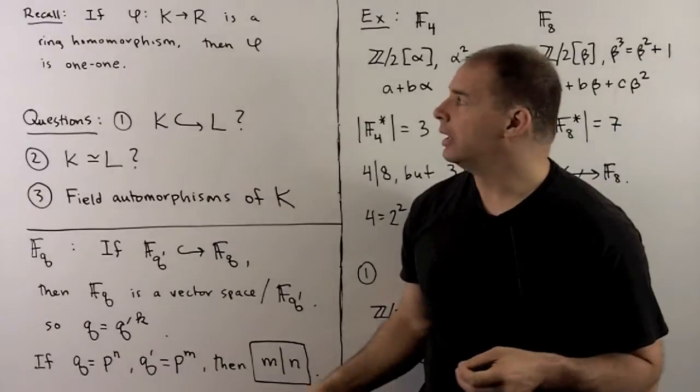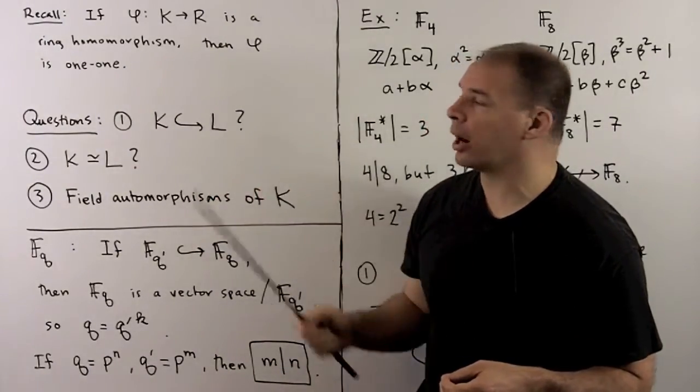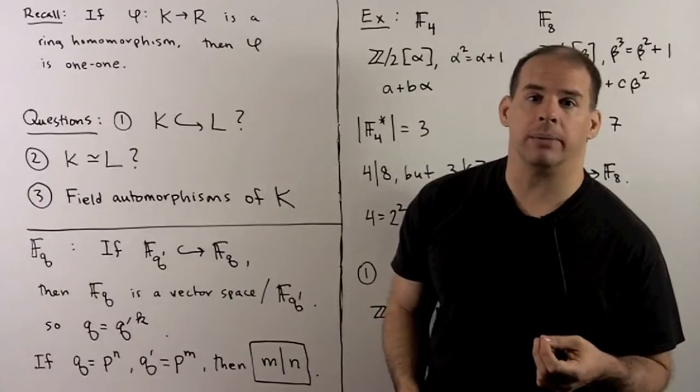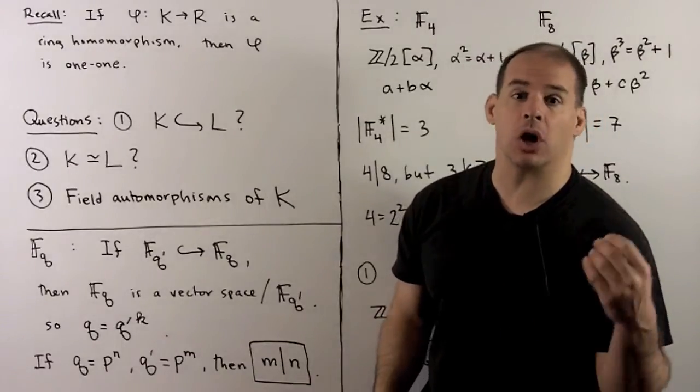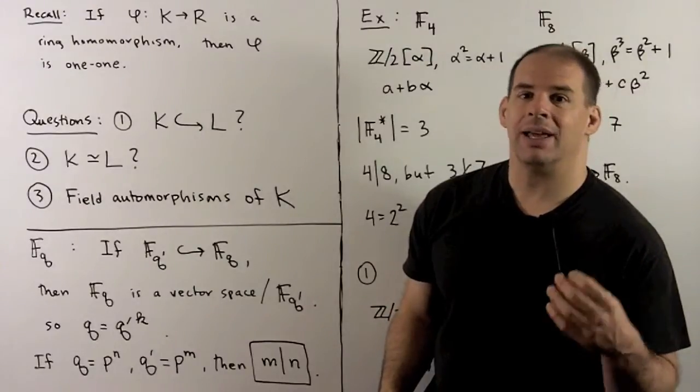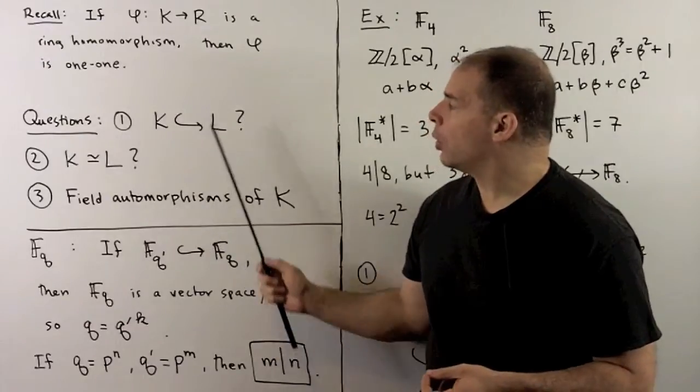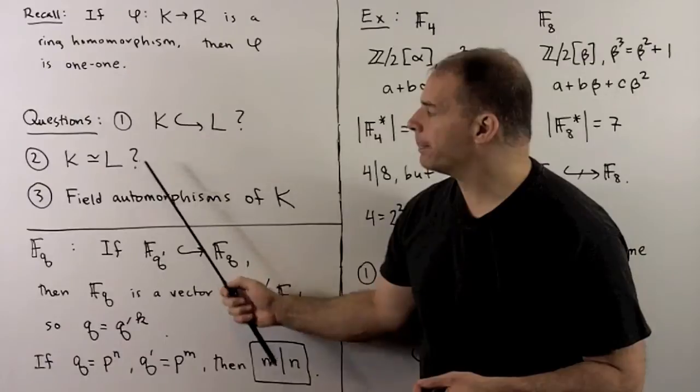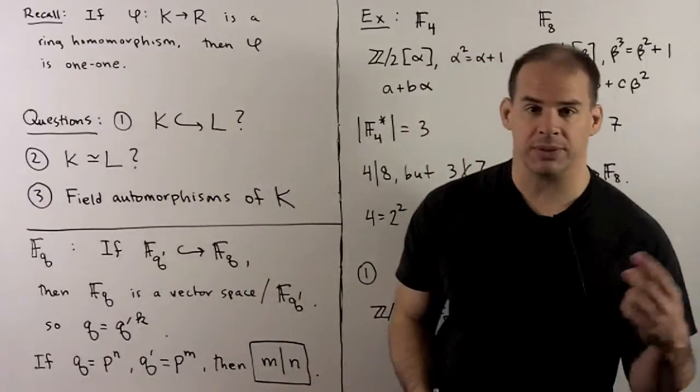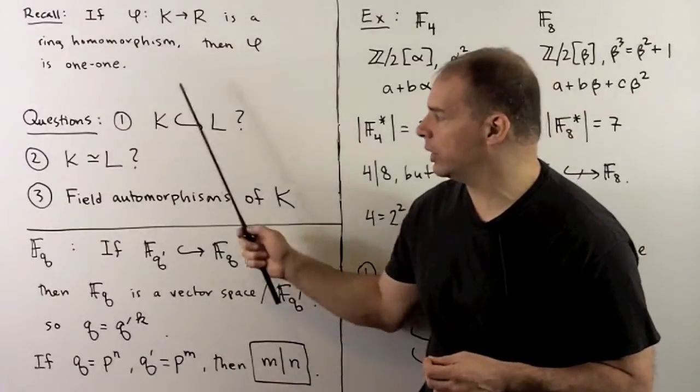Recall from last time, if phi is a ring homomorphism carrying a field k to a ring r, then phi is one to one. That means between fields, only homomorphisms are inclusions. That leads us to questions like, okay, so k and l are fields, when is k a subfield of l, when are k and l isomorphic, and where are the field automorphisms of k? Galois theory promises a connection between 1 and 3.